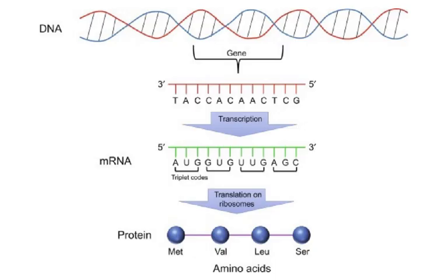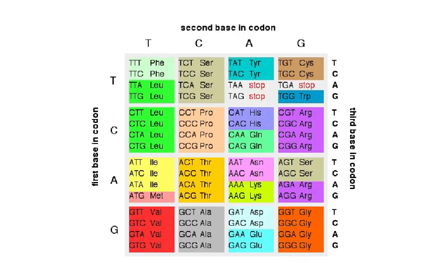The normal sequence of events is: first there is the DNA, and one strand is called the transcribed strand or template strand. That is copied in transcription from DNA to mRNA, and then the mRNA is translated. So: gene → transcription → translation on the ribosome → results in a specific amino acid sequence being put together.